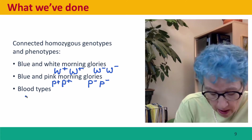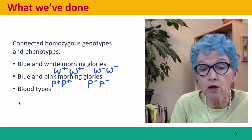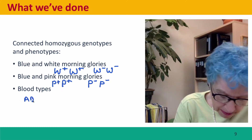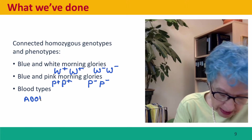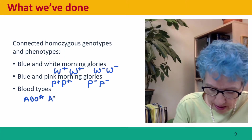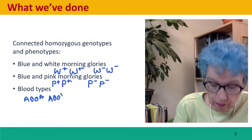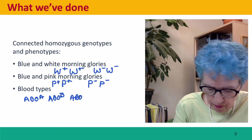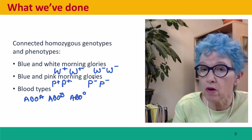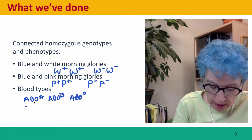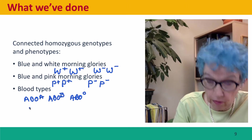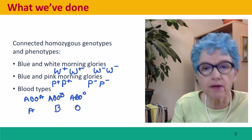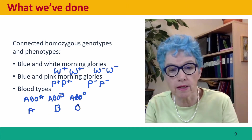For blood types, we have three different alleles — ABO-A, ABO-B, and ABO-O — and when homozygous, they are responsible for the A, B, and O blood type phenotypes respectively.